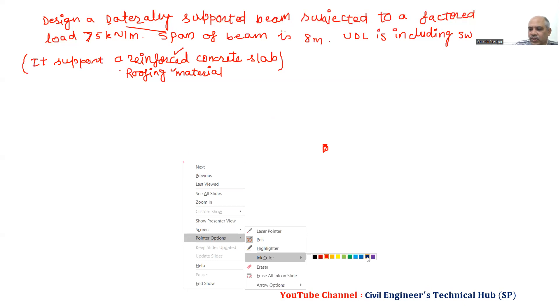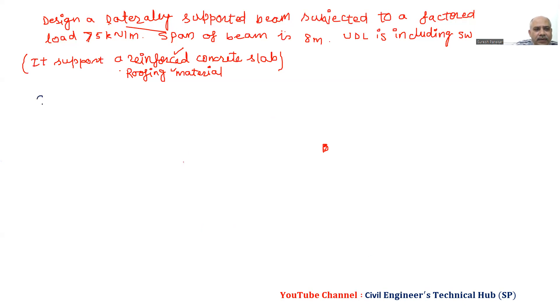Now we will start with the solution. So we have Step 1: Given data. So we have given WU is equal to 75 kilonewtons per meter. Then beam laterally supported. So this data is given.